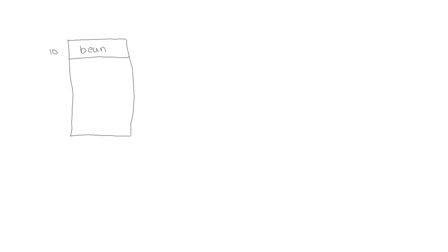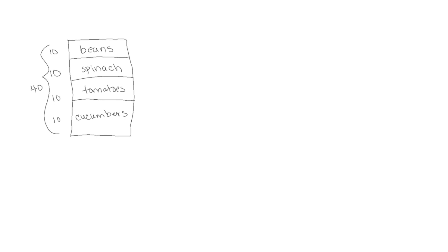Let's start with this problem. Mr. Groggins has a garden and in his garden he planted 10 rows of beans, 10 rows of spinach, 10 rows of tomatoes, and 10 rows of cucumbers. So 10 rows for four different vegetables — 10 times 4 — he planted a total of 40 rows of vegetables. In each row he put 22 vegetables. Our question is: how many plants did Mr. Groggins plant?